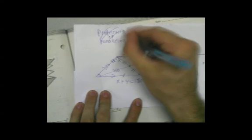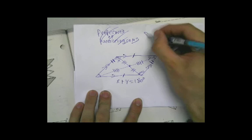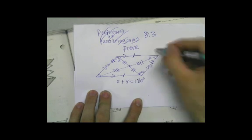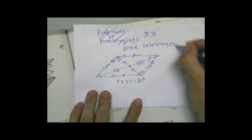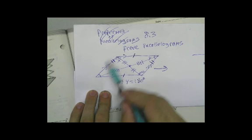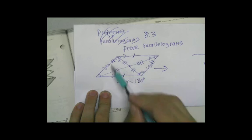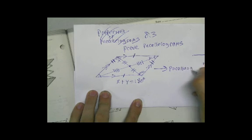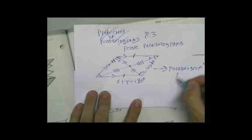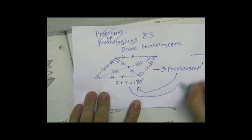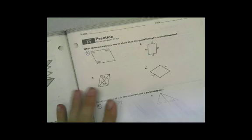All right, we're not talking about properties of parallelograms anymore. In 8.3 we're going to prove parallelograms. The way to prove parallelograms is if these things are true - all of these things or even one of them is true - then it is a parallelogram. So before we said if it's a parallelogram then these are true. Now we're saying if these are true then it's got to be a parallelogram.